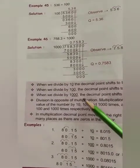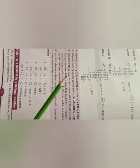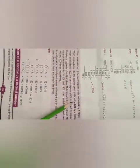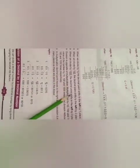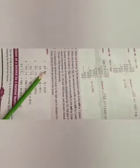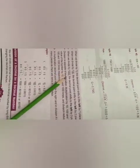Then here we see some points are given. When we divide by 10, the decimal point shifts to the left by one place. When we divide by 100, the decimal point shifts to the left by two places. When we divide by 1000, the decimal point shifts to the left by three places.